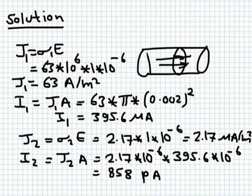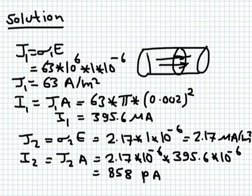If you repeat the same steps for the other material — a cylinder made of a different material with a much lower conductivity of 2.17 — you get a much lower current density and a much lower current. The current in that case is in picoamperes — 10 to the minus 12 — compared to microamperes for silver. So the first case is a good conductor and the second case is essentially an insulator.